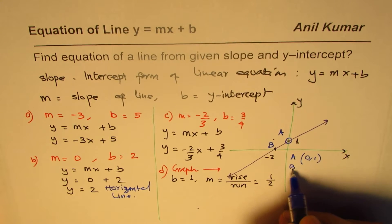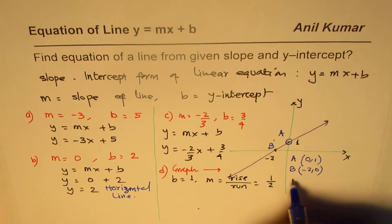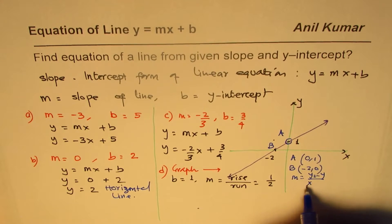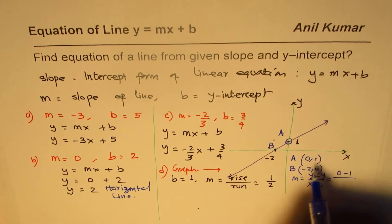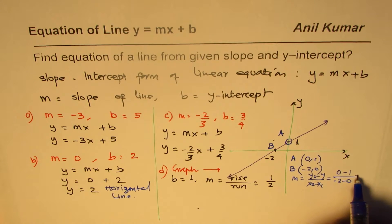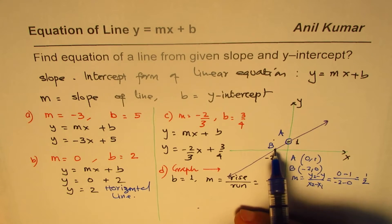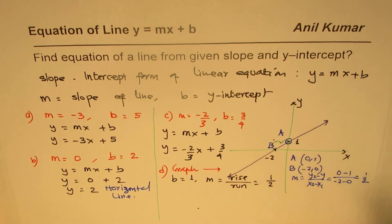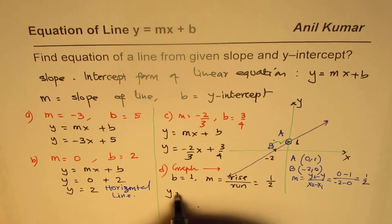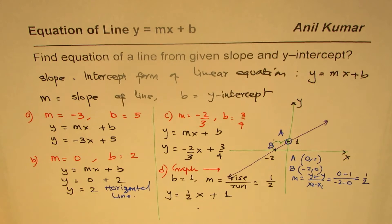We can also confirm using coordinate points. Point A is (0, 1) and point B is (-2, 0). Slope m = (y2 - y1) / (x2 - x1) = (0 - 1) / (-2 - 0) = -1 / -2 = 1/2. Either way, slope is 1/2, so the equation is y = (1/2)x + 1.